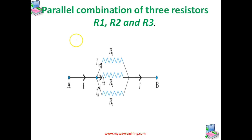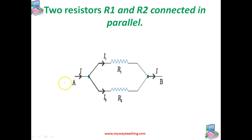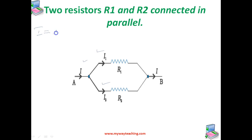Now consider a parallel combination of two resistors R1 and R2. The charge that flows in at point A from the left flows out partly through R1 and partly through R2. This means the current flowing through R1 and R2 is not the same. The currents I1 and I2 flow through R1 and R2 respectively, and the total current I equals I1 + I2.